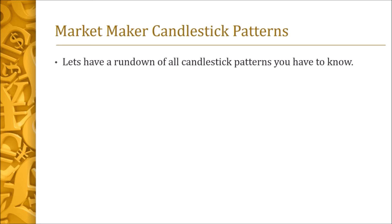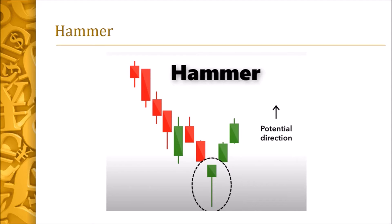So let's have a rundown of all the candlestick patterns you have to know. First on our list is the hammer. For these candlesticks to work, they have to be in the rightful market context. In market maker terms, the rightful market context is either the second leg of an M or the second leg of a W, or a position at the 50 EMA depending on the time frame. If you do not understand these concepts, please watch other videos on this channel or take the market maker course.